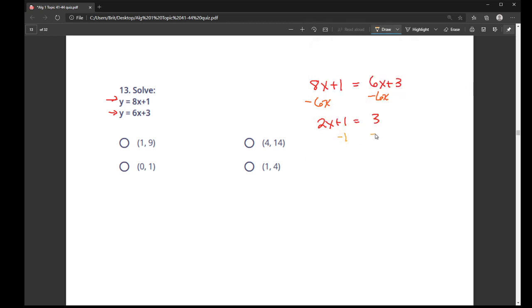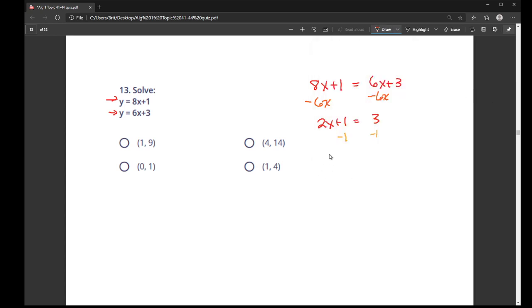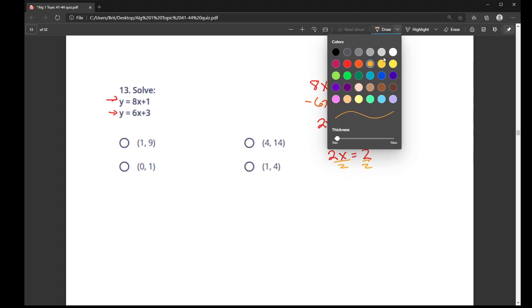Then I'm going to subtract the 1 so that I just have the x term alone. So I have 2x is equal to 2. And if I divide by 2, I get that x is equal to 1.